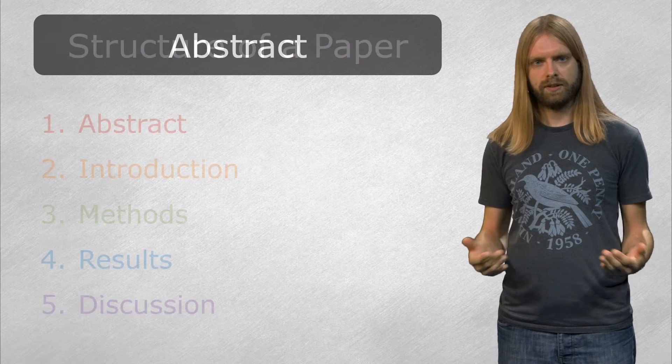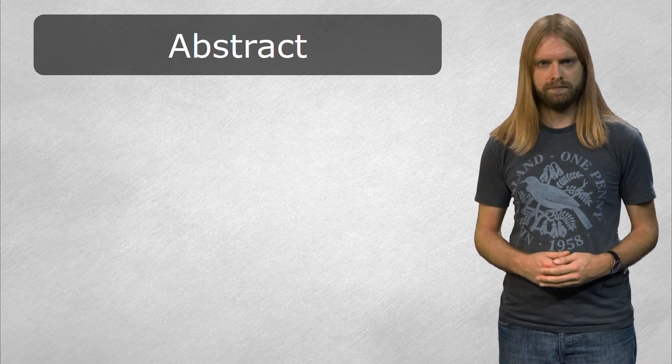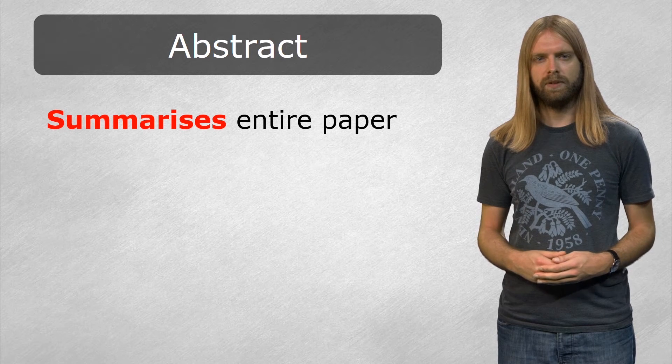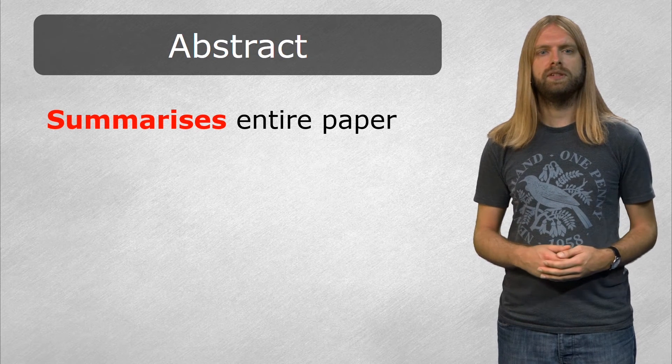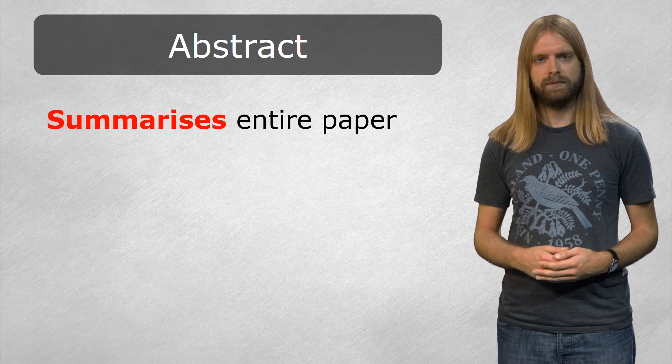Scientific papers start with an abstract, which is a short summary containing all the basic information a reader would want to know. Abstracts will include the hypothesis, the study species, a brief description of the methods, and the main conclusions of the paper.